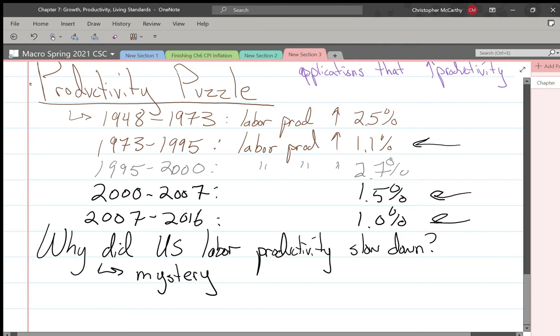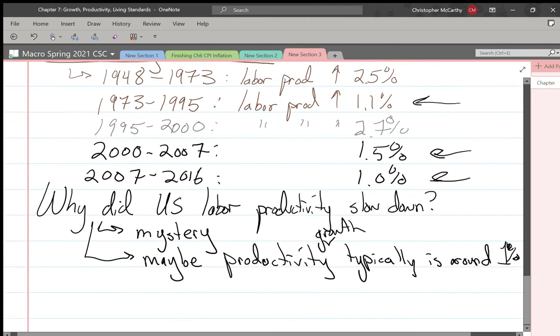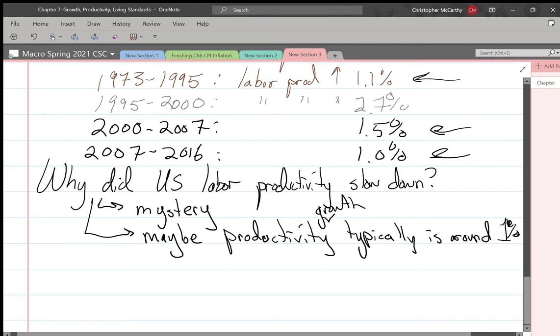The answer is somewhat of a mystery. There's a lot of different arguments and viewpoints, but it may be that productivity growth is typically around one percent and we just had some lucky periods.